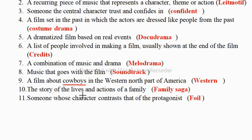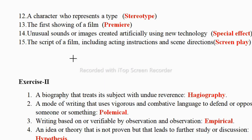Next: the story of the lives and actions of a family — it is called family saga. Any movie based on a family is called family saga. Next: someone whose character contrasts the protagonist. Contrast means opposite, so opposite to the hero — which would obviously be the villain — is called foil or antagonist.